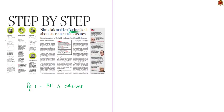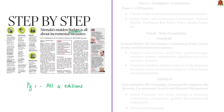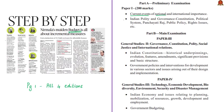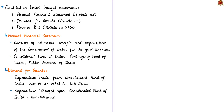Let's move on to our first article analysis, which is about the budget presented by the Finance Minister. This discussion will be part of the prelim syllabus under current events of national importance and Indian polity and governance. It is also relevant in the main syllabus in GS Paper 2 under significant provisions of the Indian Constitution and government policies and interventions for development. It is also relevant in GS Paper 3 under Indian economy, planning, mobilization of resources, growth, development, employment, and government budgeting.